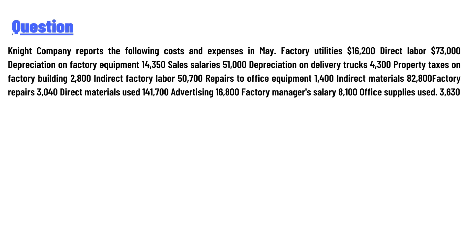Utilities $16,200; direct labor $73,000; depreciation on factory equipment $14,350; sales salaries $51,000; depreciation on delivery truck $4,300; property taxes on factory building $2,800; indirect factory labor $50,700; repair to office equipment $1,400.